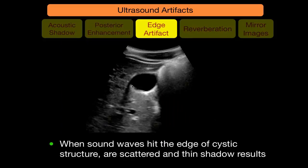Edge artifact — ultrasound waves pass through multiple layers of the side wall, which scatters and decreases the amplitude of the wave, producing a black shadow on the side wall of the gallbladder. This is a mimicker of the posterior shadow seen with gallbladder stones.